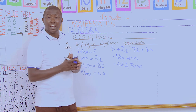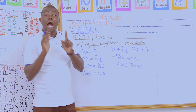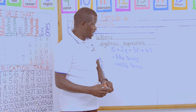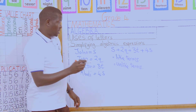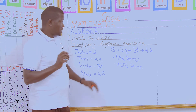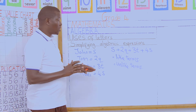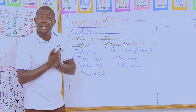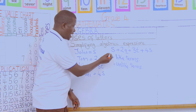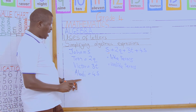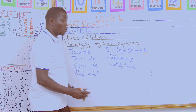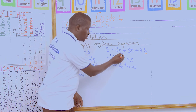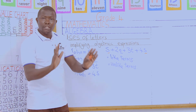Like terms we can bring together. How will you identify like terms? You will identify them by which boys have the same counters represented by the same letter. For John, it's S counters. And Abdi also has four S counters. So S and S can be brought together because they are like terms. But Q and T are not like terms, so they will remain the same.